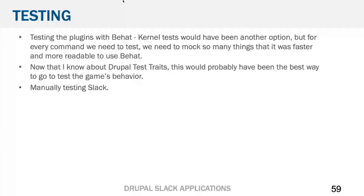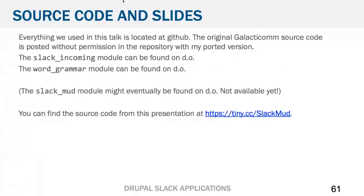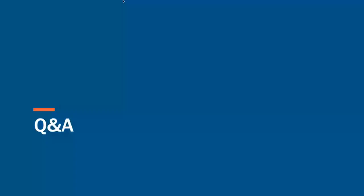Everything we used here is on GitHub — the original Galacticom source code. I don't know that I actually have permission to it, but it's 30-plus years old so I think I do. If a cease-and-desist letter comes, I will absolutely take it all down. Slack Incoming is on drupal.org, Word Grammar is on drupal.org. The MUD module is not — it's not prime time or even alpha release — but you can get it from the repo which has a link to my old MidCamp page for this talk.